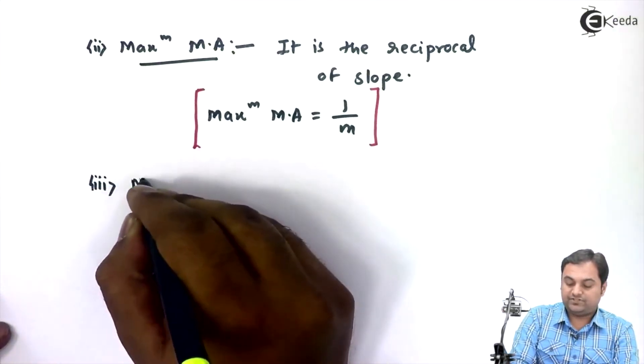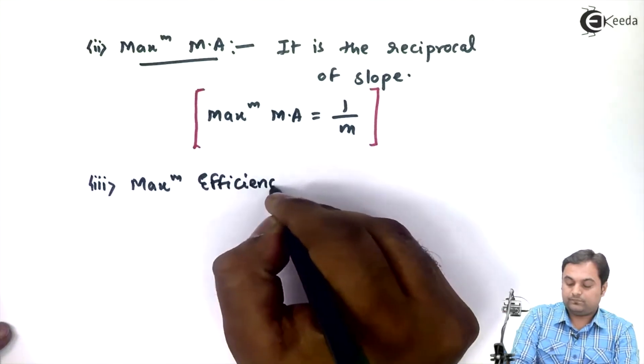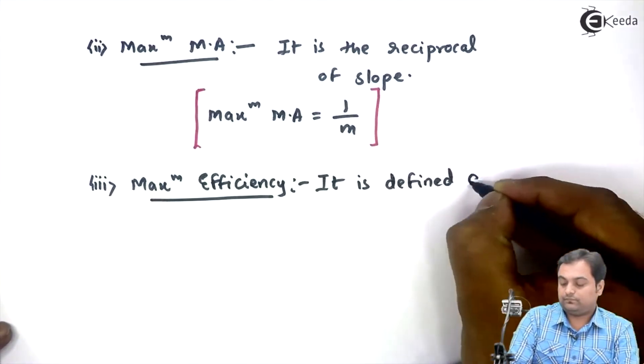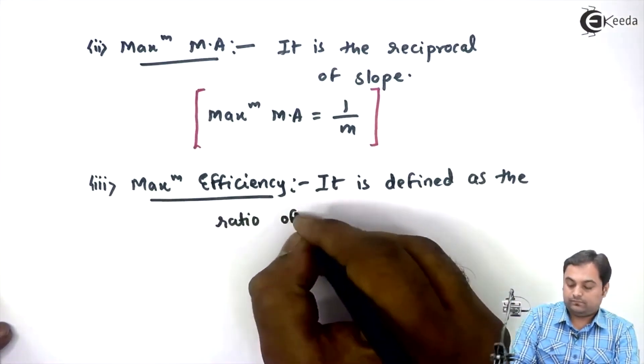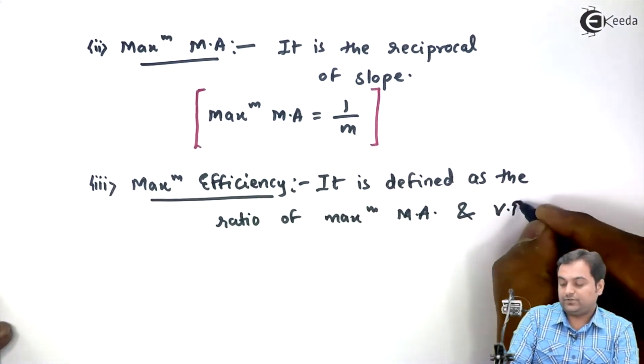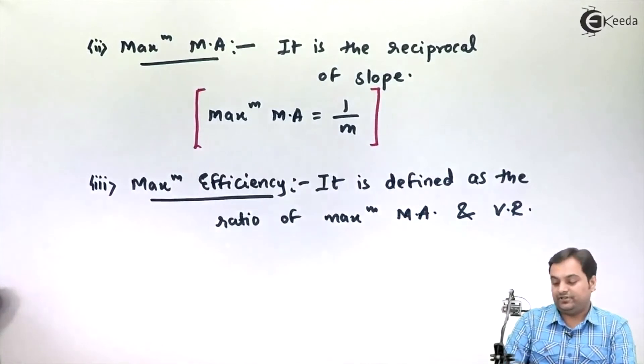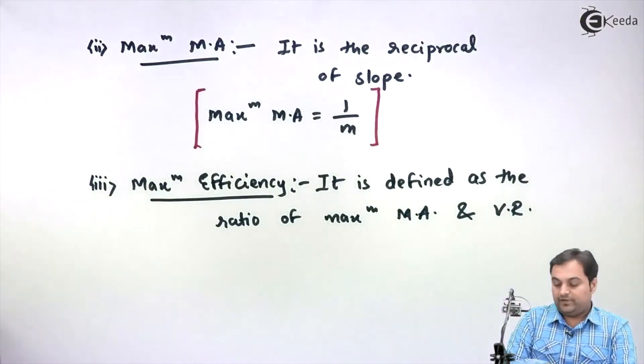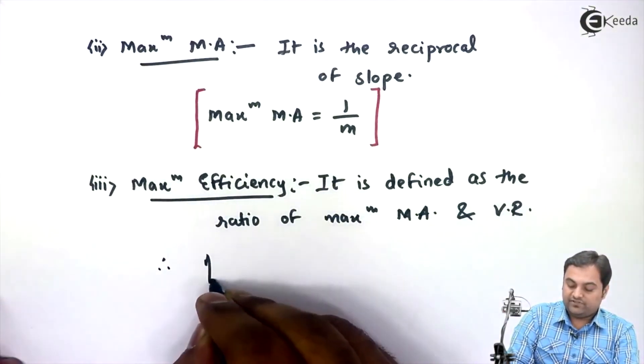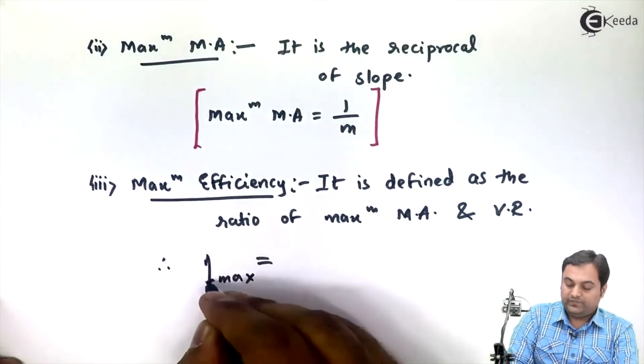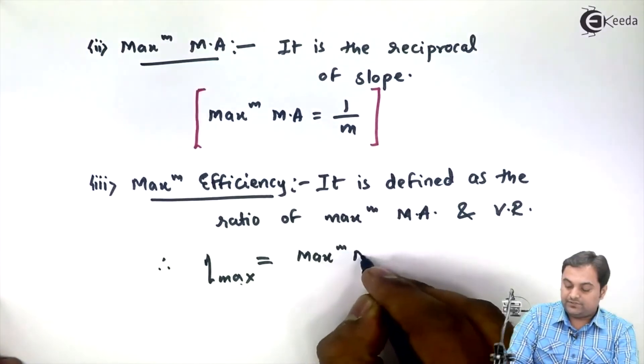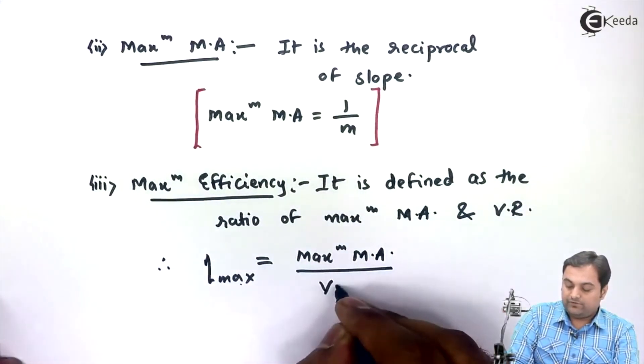Next, maximum efficiency. It is defined as the ratio of maximum mechanical advantage and velocity ratio. Be careful here, the velocity ratio is not maximum, only the mechanical advantage need to be maximum. So therefore I'll write down maximum efficiency as eta max. So eta max, maximum efficiency, is equal to maximum mechanical advantage upon velocity ratio.